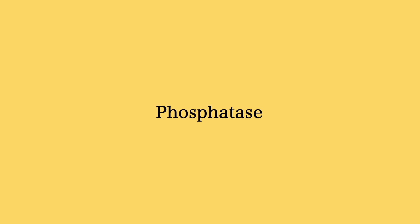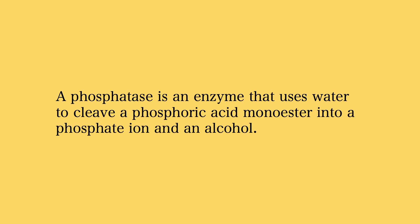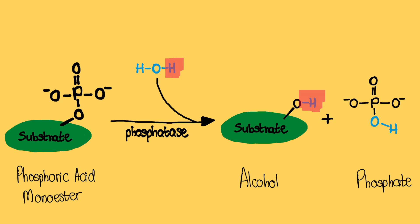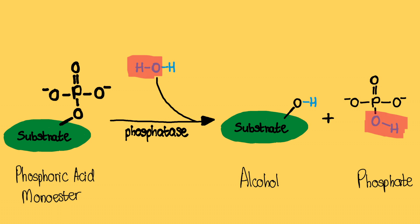One of the most common hydrolases you will encounter on the MCAT are phosphatases. A phosphatase is an enzyme that uses water to cleave a phosphoric acid monoester into a phosphate ion and an alcohol. You can see the overall mechanism in the following diagram. One hydrogen from the water molecule is added to the substrate to create the alcohol molecule, and the remaining hydroxyl group (OH) is added to the phosphate group.